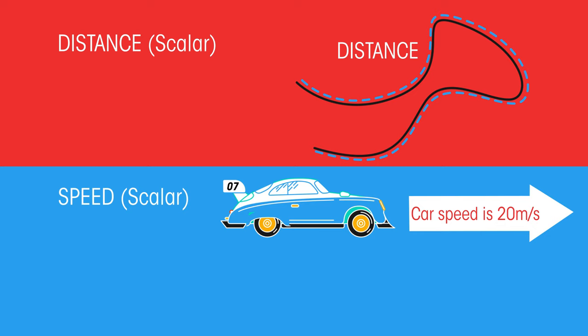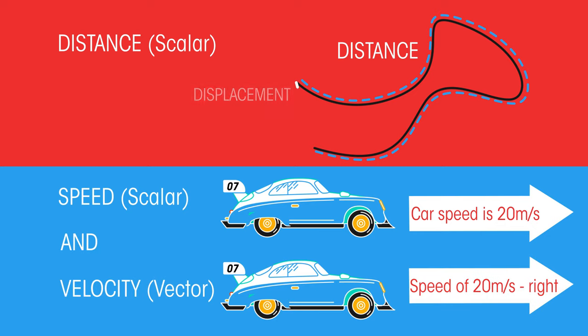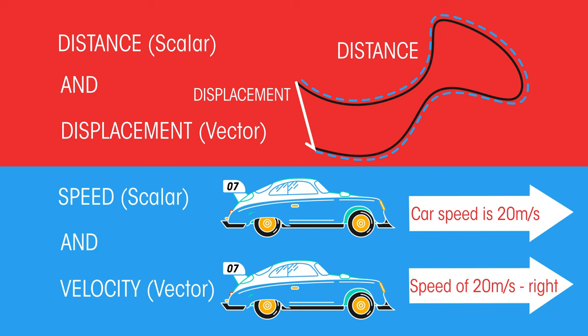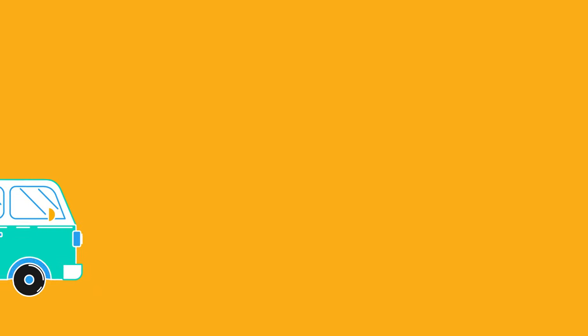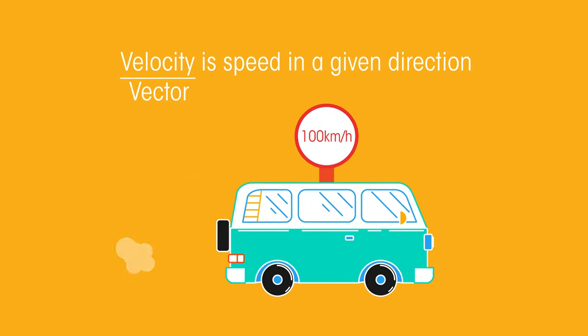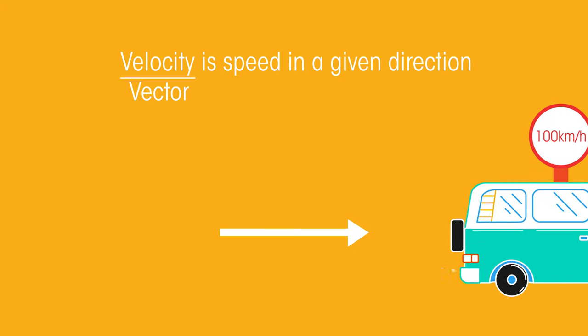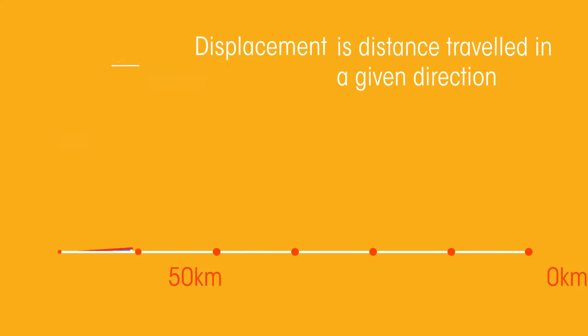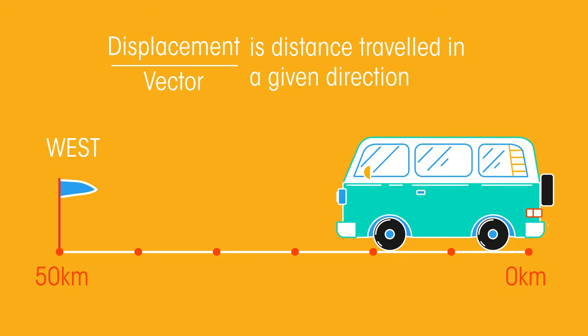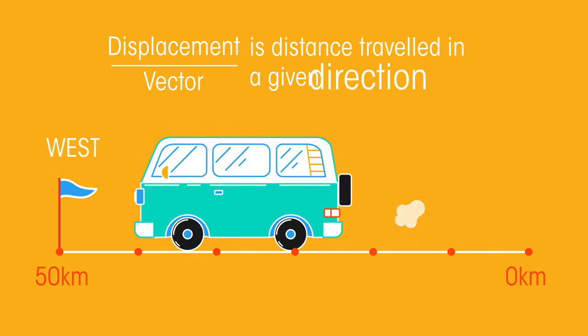There are a few cases where you might come across this. Whilst speed and distance are scalars, velocity and displacement are vectors. They also have a direction. Velocity therefore tells us how fast an object is moving as well as its direction. Displacement tells us how far an object has moved and the direction that it has moved in.